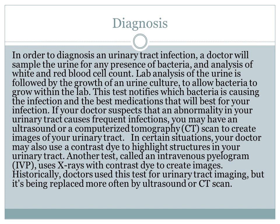In order to diagnose a urinary tract infection, a doctor will sample the urine for any presence of bacteria and analyze the white and red blood cell count. Lab analysis of the urine is followed by the growth of a urine culture to allow bacteria to grow within the lab. This test identifies which bacteria is causing the infection and the best medications for your infection. If your doctor suspects an abnormality in your urinary tract causes frequent infections, you may have an ultrasound or a CT scan to create images of your urinary tract. In certain situations, your doctor may also use a contrast dye to highlight structures in your urinary tract.